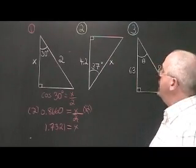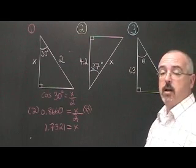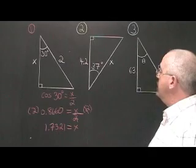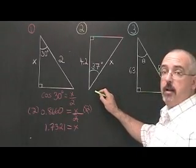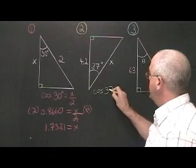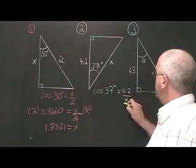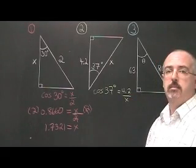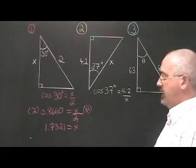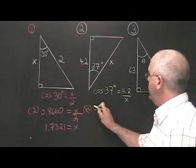In example 2, we have a 37 degree angle. Our adjacent is 4.2, and we want to know the length of the hypotenuse. We fill in our CAH formula like this. Cos of 37 degrees is equal to adjacent 4.2 over x.